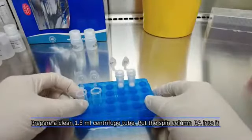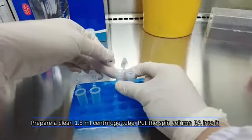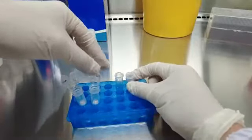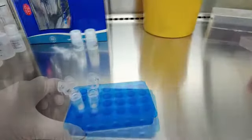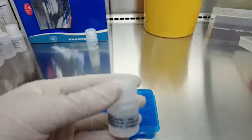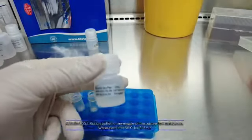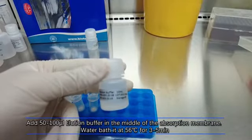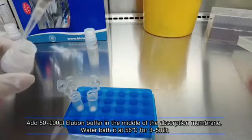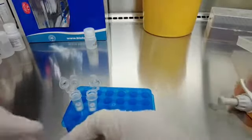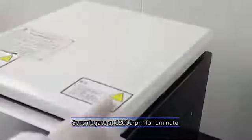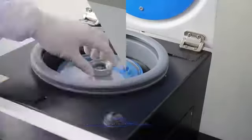Prepare a clean 1.5 ml centrifuge tube. Put the spin column I into it. Add 50 to 100 microliter elution buffer in the middle of the absorption membrane. Water bath it at 56 degrees centigrade for three to five minutes. Centrifugate at 12,000 revolutions per minute for two minutes.